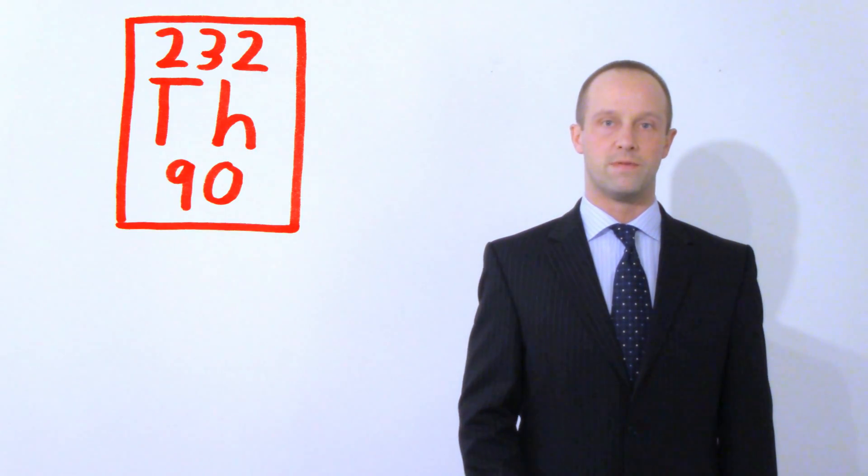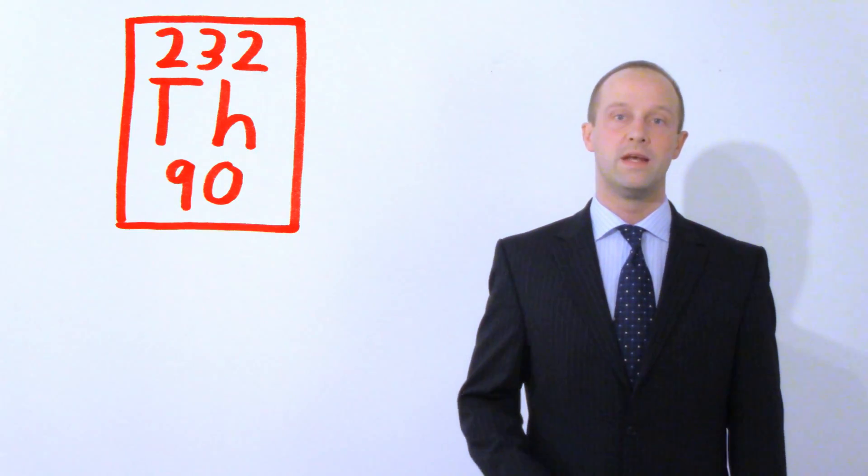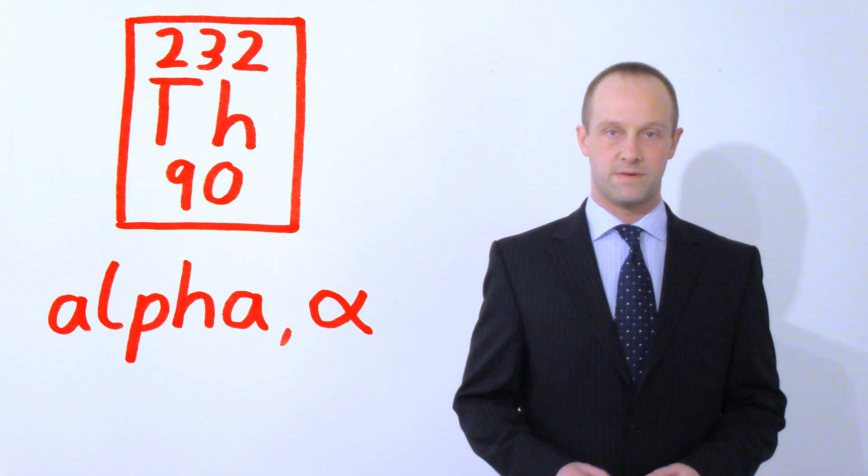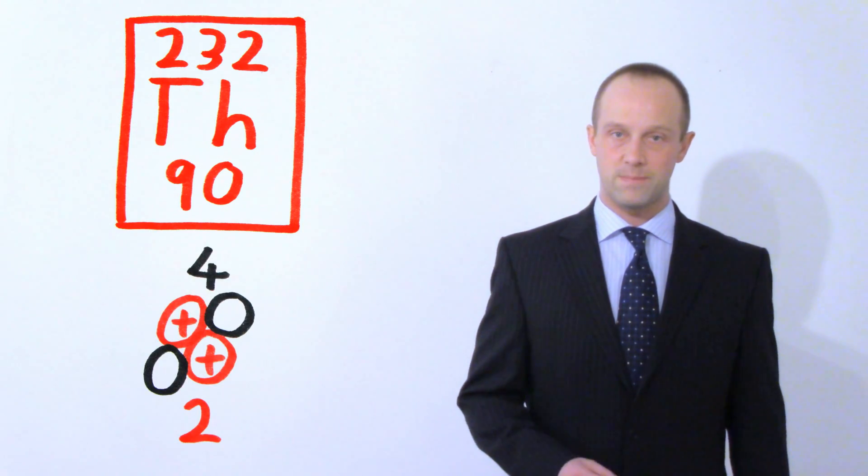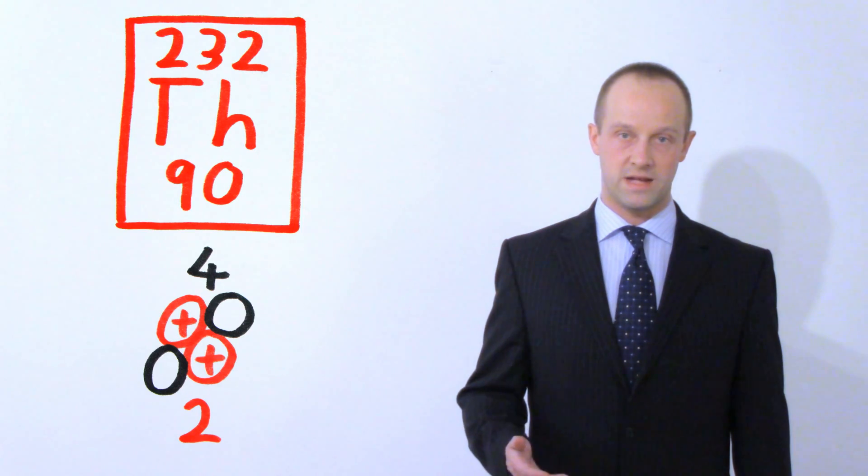Because this isotope of thorium, thorium-232, is an alpha emitter, it gives off an alpha particle. Remember, an alpha particle is two protons and two neutrons. The alpha particle has a mass, of course, of four.